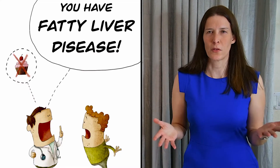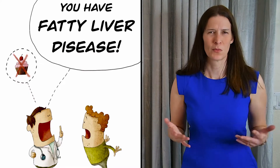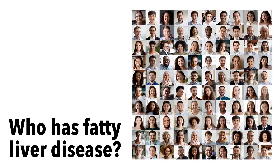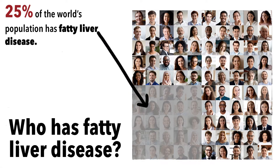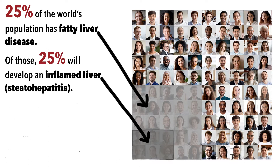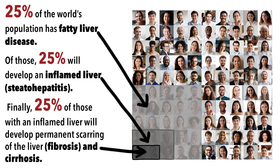So, you've been told that you have a fatty liver. What does this mean? Today, approximately 25% of the world's population has a fatty liver, and most people are not even aware of it. So how does fat infiltration cause liver cells to die?